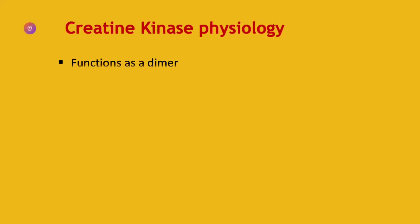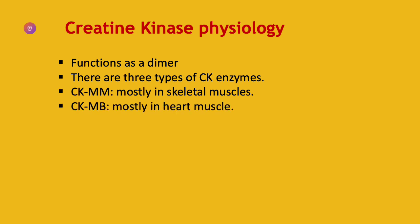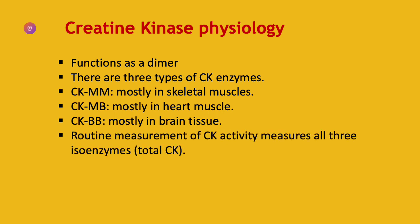CK is a dimeric molecule composed of M and B subunits. The two subunits can form three isoenzymes: CK-MM, found mostly in skeletal muscles; CK-MB, found mostly in heart muscle; and CK-BB, found mostly in brain tissue. Routine measurement of CK activity measures all three isoenzymes, i.e., total CK.